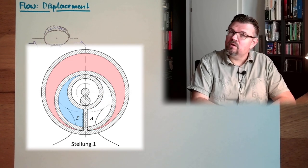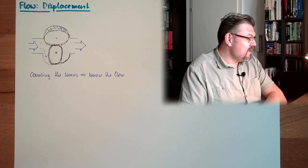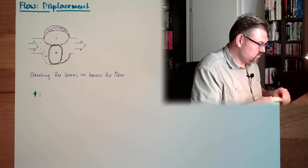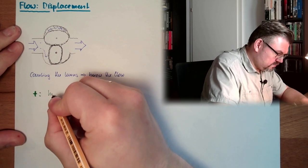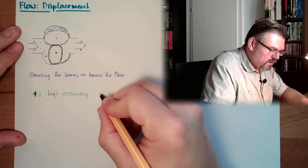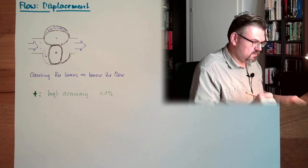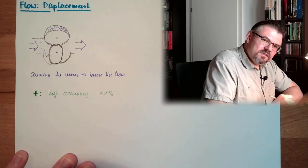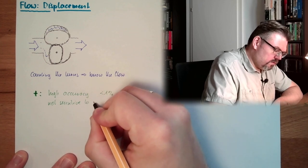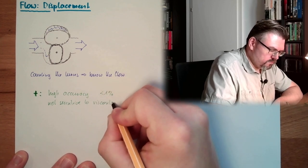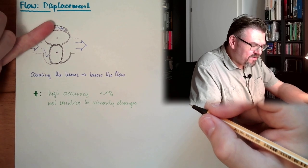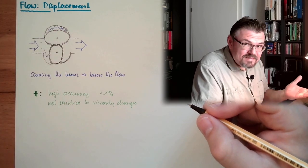Okay, so displacement flow measurement, working mechanically, mechanically blocking. So the benefit, like I said, the benefit of those is high accuracy. So we're usually talking about smaller than 1%. And it doesn't really matter, the viscosity doesn't really matter. So we are not sensitive to viscosity changes. There is a defined volume and this will be at the other side, no matter what.